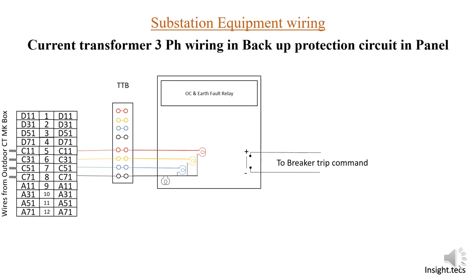For backup protection, there is a TTV, and a backup relay called the overcurrent and earth fault relay. The TTV's work is called the Test Terminal Block. Whenever we have to test something, or if we have to test our relay, it can be tested from TTV — we don't need to open the wiring completely. So those wires come from outside: C11, C31, C51, and C71. They go through TTV, and from TTV to the overcurrent and earth fault relay, or backup protection relay. What current is passed?